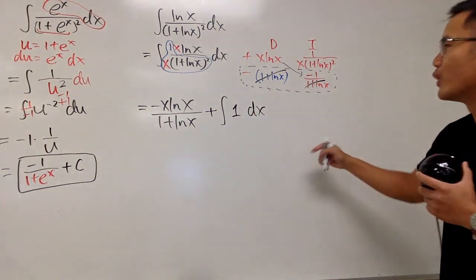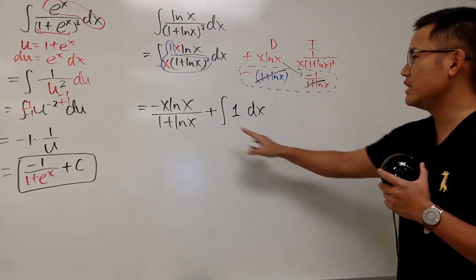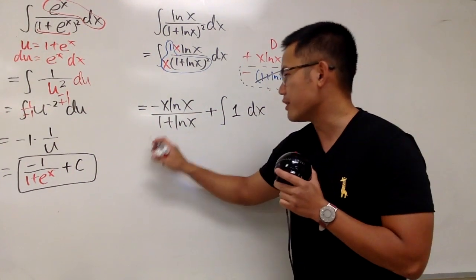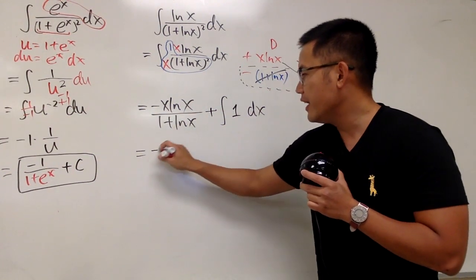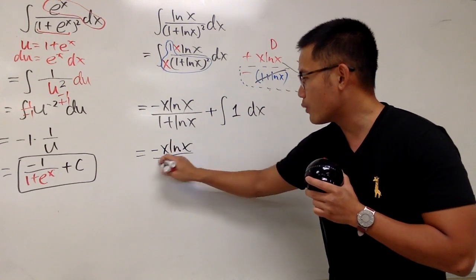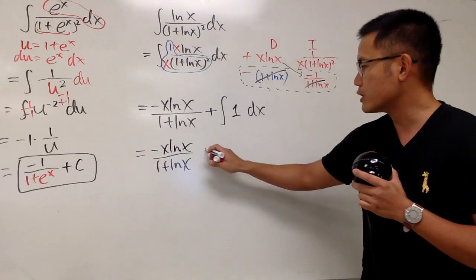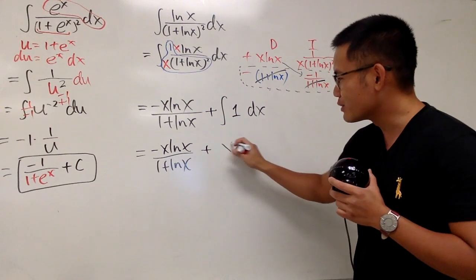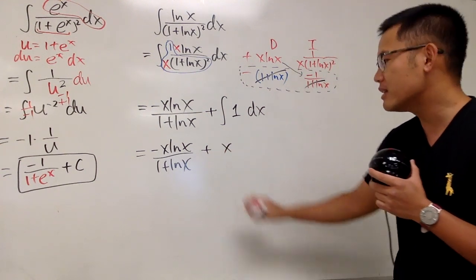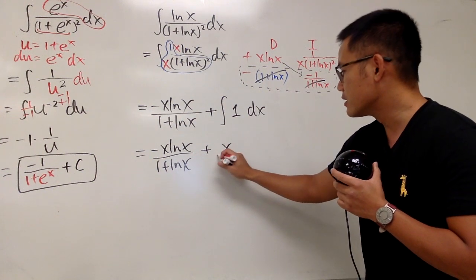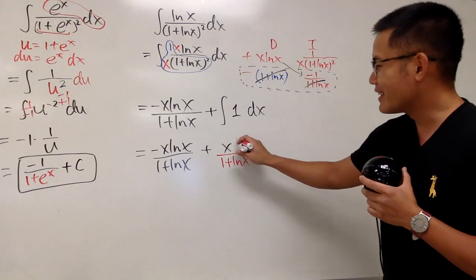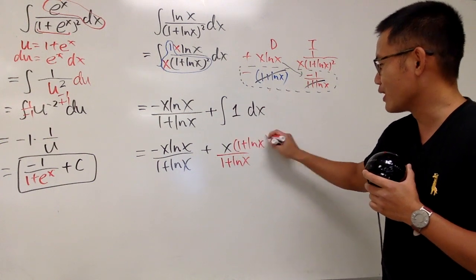So, here we just have 1. And, of course, we are in the x world. And, again, negative times negative, it's a positive right there already. And, now, of course, we can just finish this right here. So, I will just copy this down again. Negative x natural log of x over 1 plus natural log of x. And, of course, we add the integral of 1 in the x world, it's just x. So, we have the x right here. That's pretty much it. But, of course, we can make it better. Let's get the common denominator. So, I will multiply this by 1 plus natural log of x. And, then, right here, I will do the same. 1 plus natural log of x.